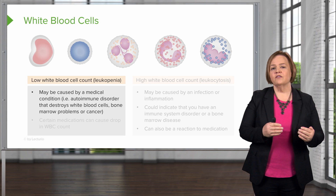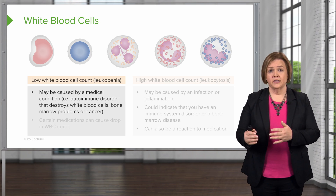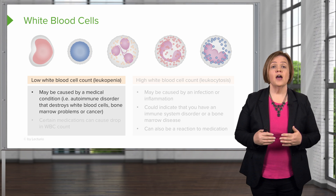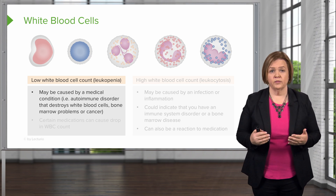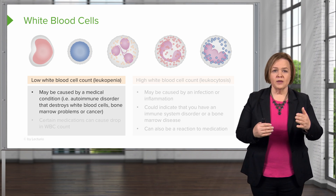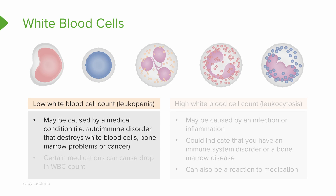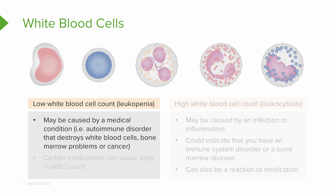You can either have a low white blood cell count or a high white blood cell count when we're talking about an abnormal white blood cell count. The low white blood cell count is called leukopenia — leuko meaning white cell, and penia meaning low. The causes of that could be some type of medical condition.